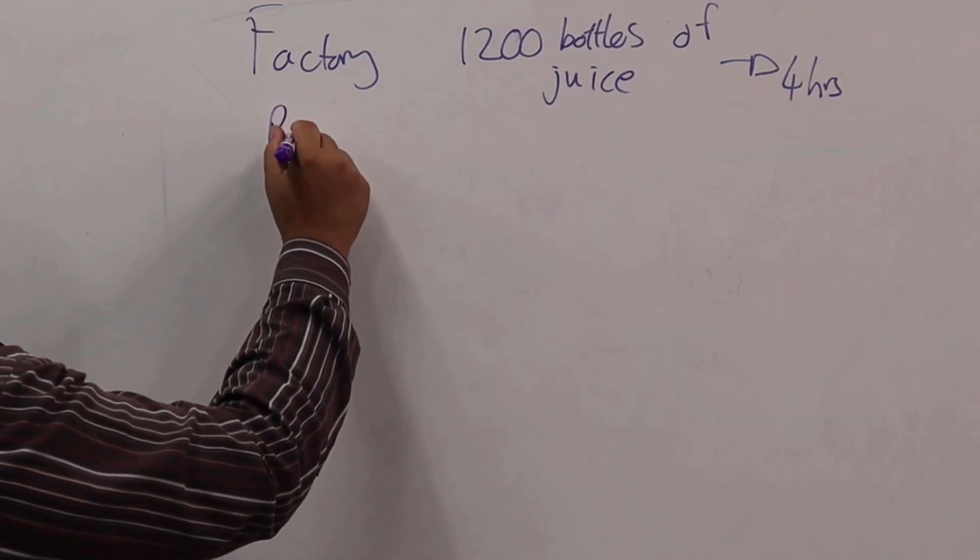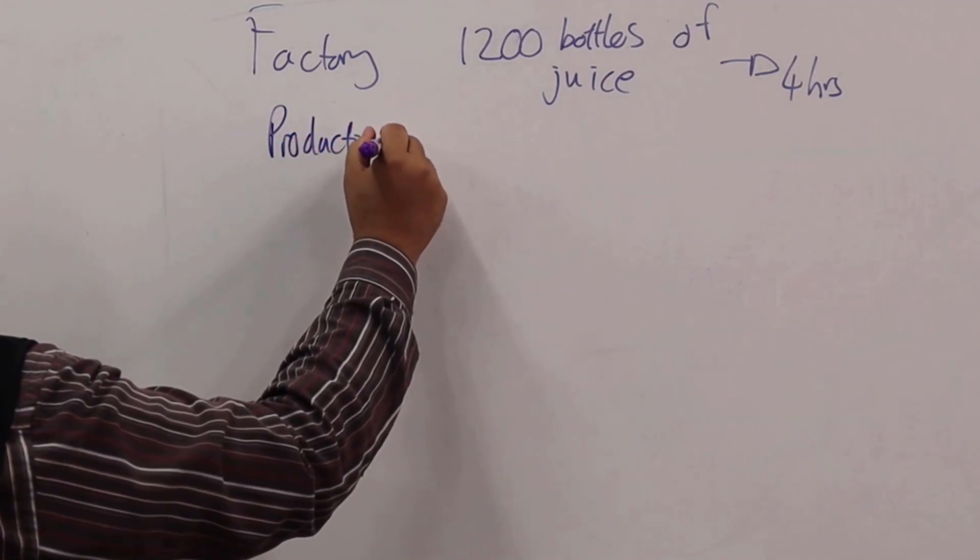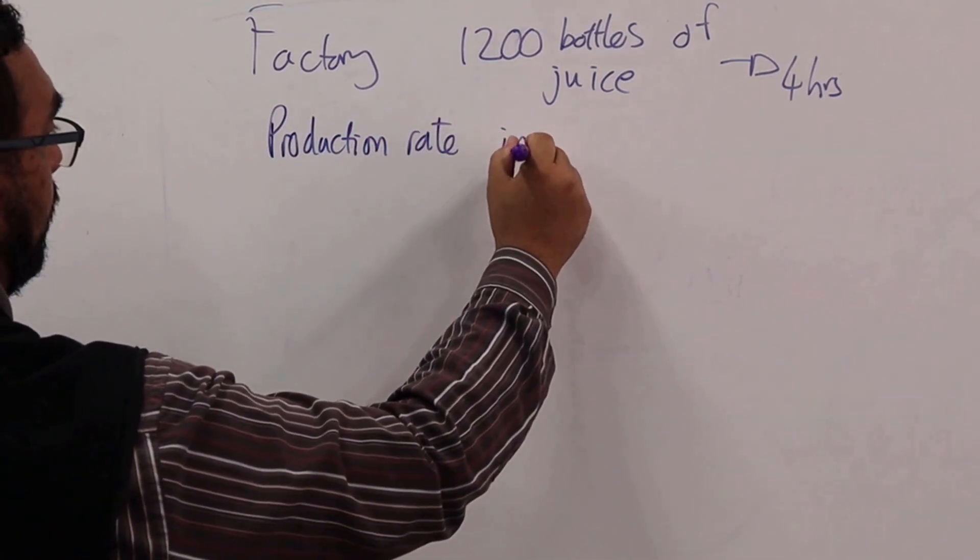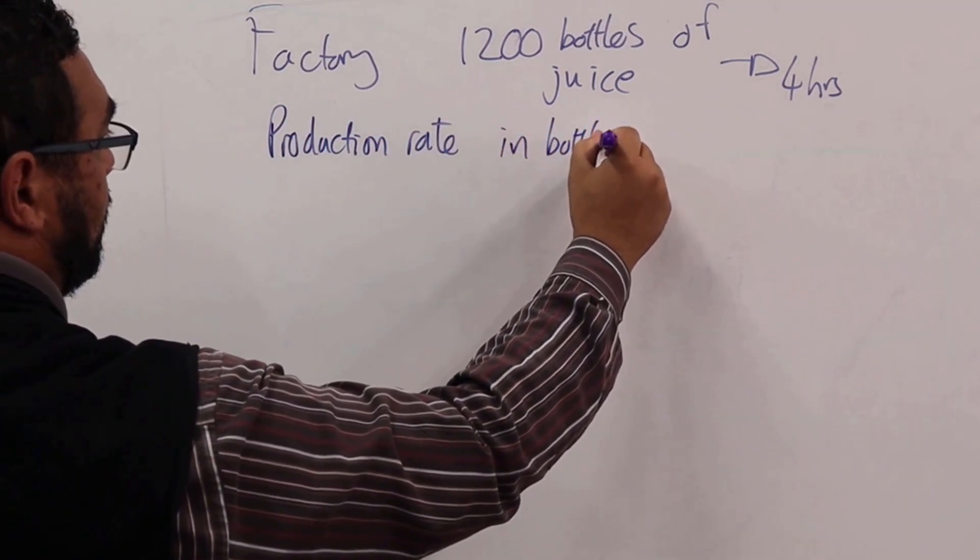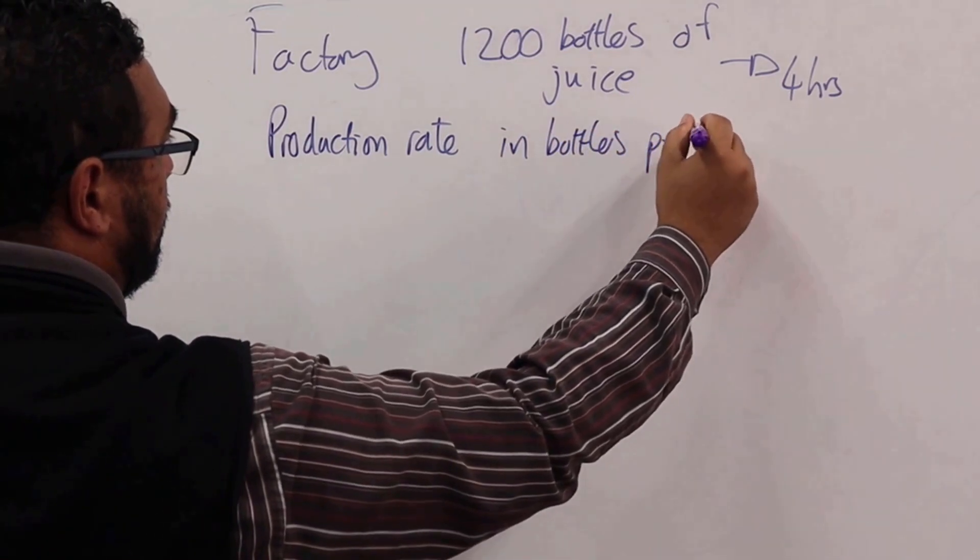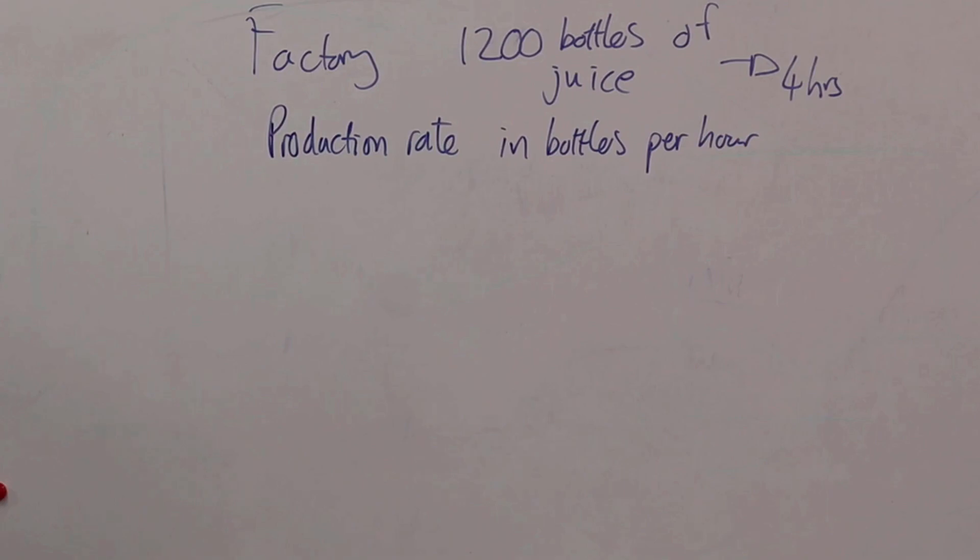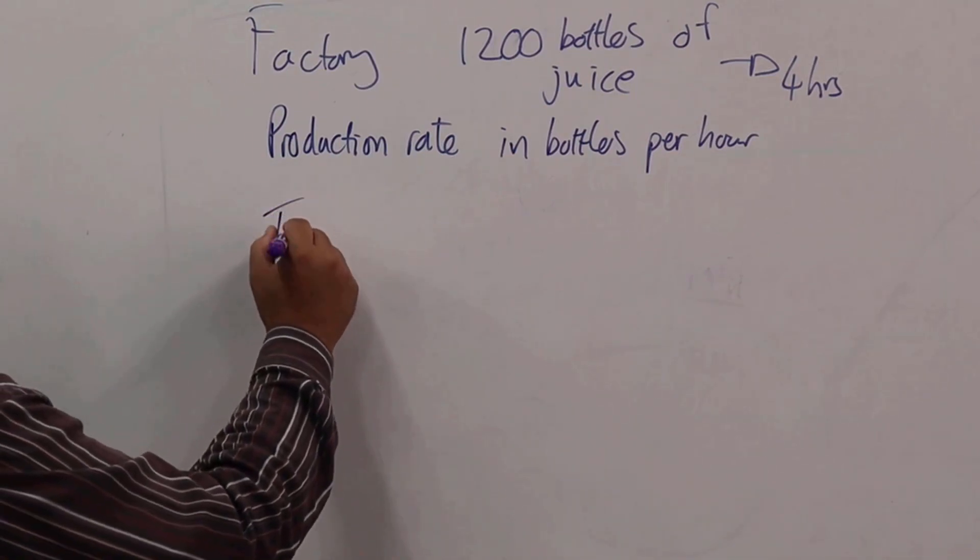Let's write that down. What is the production rate in bottles per hour? Now do we get scared with the wording? No we don't. Why? Because we follow the exact same steps. The first one is identifying the quantities. So we have